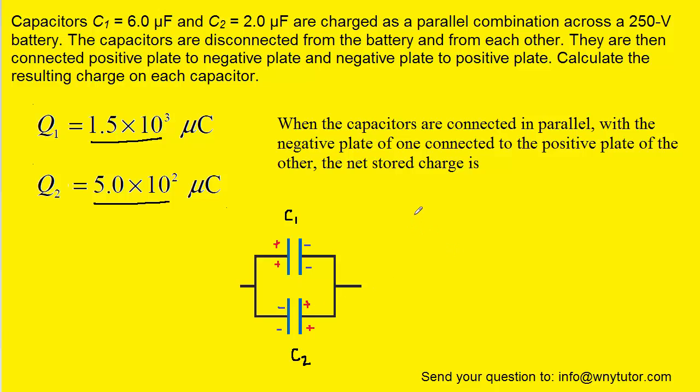Now in this situation, the total amount of charge in the system is going to equal the charge on Q1 minus the charge on Q2. And the reason that we have to include a minus sign rather than a plus sign is because of the unique way in which they're connected, the positive plate connected to the negative plate. On the other hand, if the positive had been connected to the positive plate, then the total charge actually would have been Q1 plus Q2.